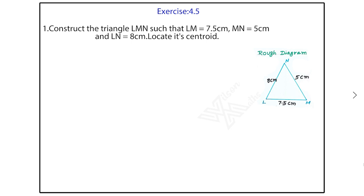First rough diagram. We have to make rough, no need real measurements. What are the things given in the question we have to mention in the rough diagram? First, LM equal to 7.5 cm. Then MN equal to 5 cm. And LN equal to 8 cm. We mentioned all the three measurements.